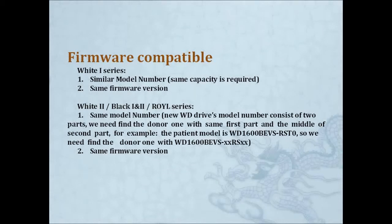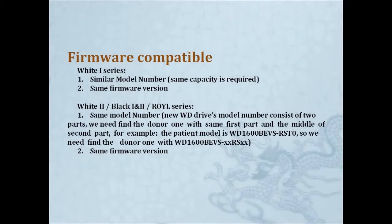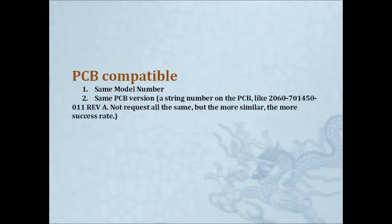For newer WD drives like RYL, the model number consists of two parts. You need to find a donor with the same first part and matching second part. For example, if the patient model is WD1600BEVS-RST0, you need to find a donor like WD1600BEVS-XXRSX, where XX can differ but other parts should be the same. For a donor PCB, you need the same model and same PCB number.